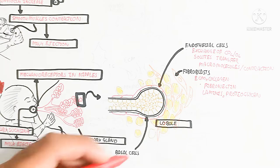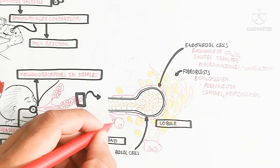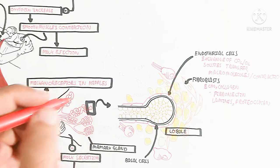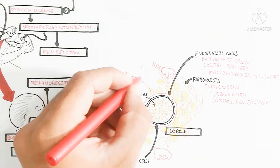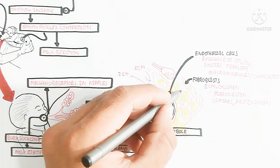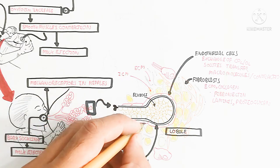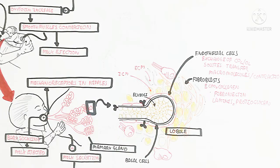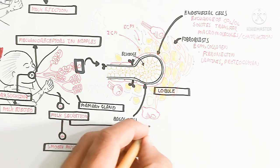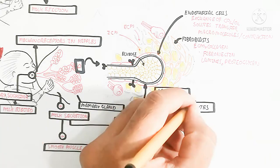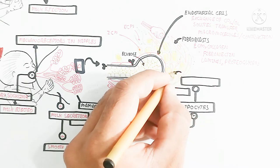Endothelial cells contain oxytocin receptors, to which oxytocin binds to cause smooth muscle contraction. Adipocytes are present in the form of yellow-colored cells, and immune cells such as macrophages, monocytes, and endothelial cells are present for defense, producing inflammatory cytokines. Fibroblasts are also present, producing extracellular matrix components including collagen, fibronectin filaments, and proteoglycans.